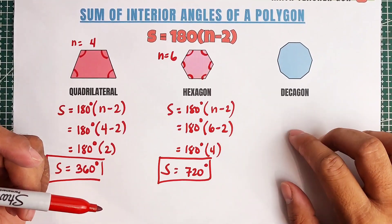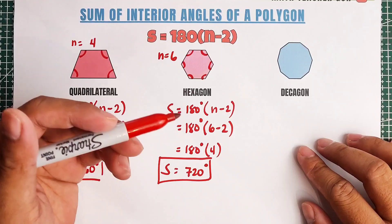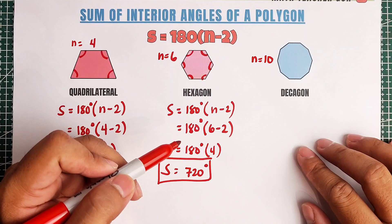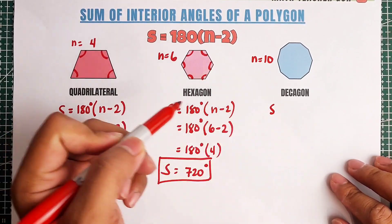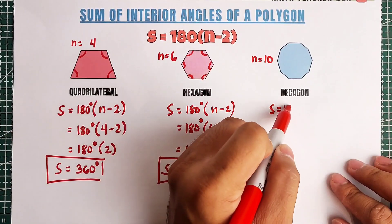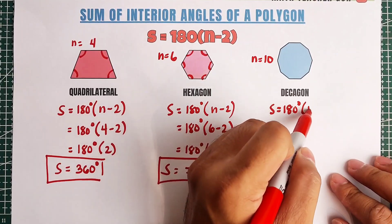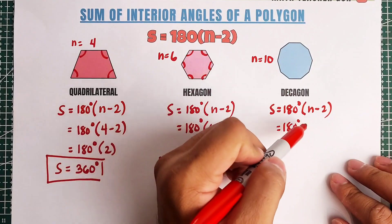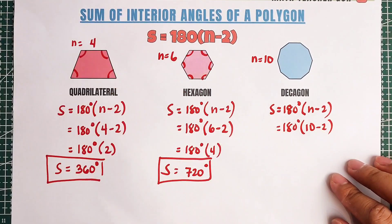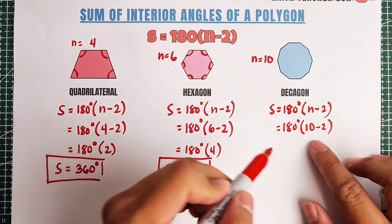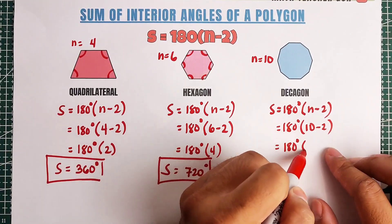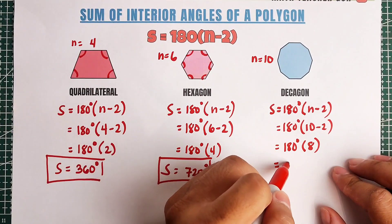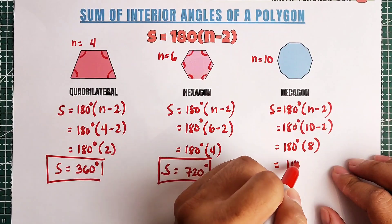Now let's continue with the last one — decagon. When we say decagon, it is a polygon with 10 sides. To use the formula again: S is equal to 180 degrees times N minus 2. Plug in N, which gives us 180 degrees times (10 minus 2). This is 180 degrees times 8. And 180 degrees times 8 — the correct answer is 1440.